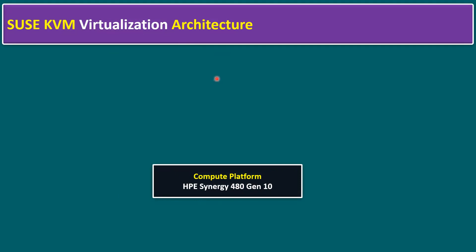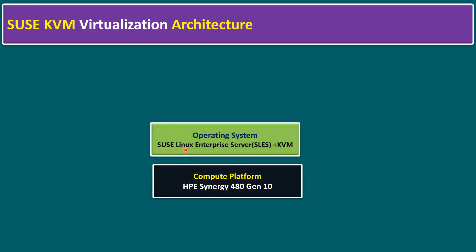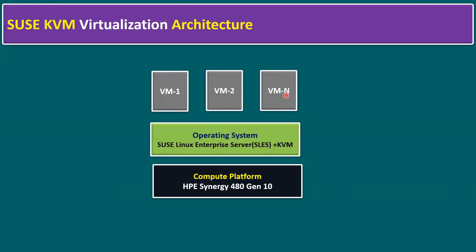Within our compute platform — HPE Synergy 480 Gen 10 — on top we are running SUSE Linux Enterprise Server with the KVM module. On top of the operating system we are running multiple virtual machines. To manage these virtual machines we can use CLI (command line interface) or graphical user interface.